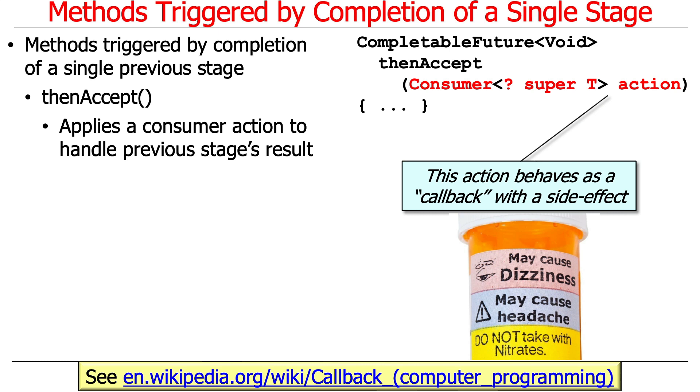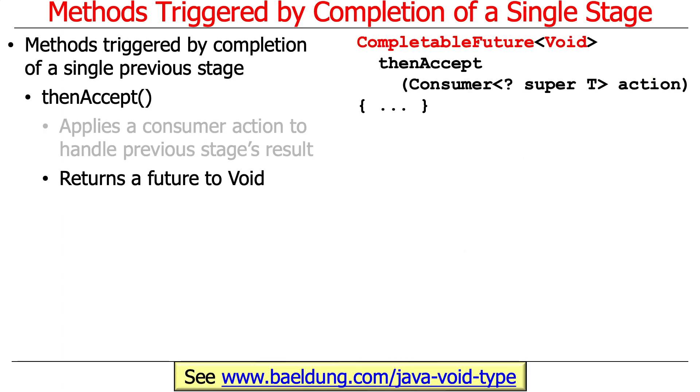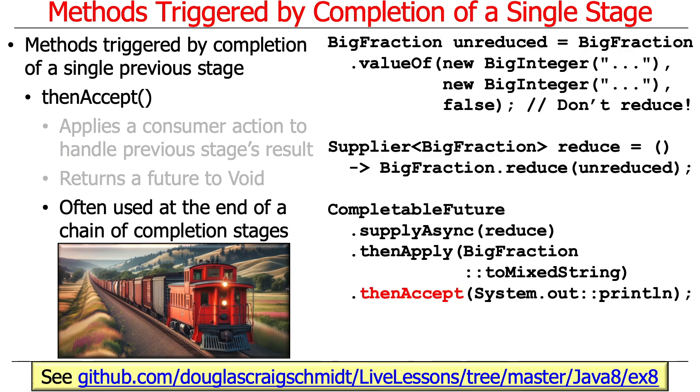Hopefully you all know what a callback is and what a side effect is, which are sometimes good, sometimes bad, depending on various factors. As you can see here, thenAccept returns a CompletableFuture to void, meaning there is no return value that comes back. You do get back a CompletableFuture, so you can do things like join on it, but you won't get a result back. We typically use thenAccept at the end of a chain of completion stages where we want to have some kind of side effect when all is said and done.